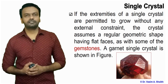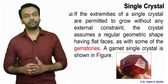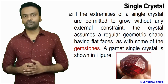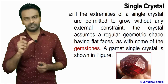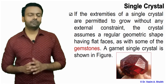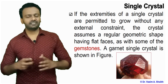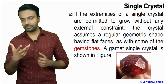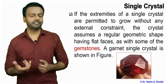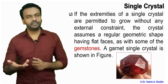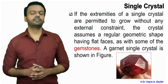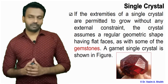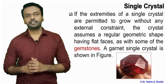To grow a single crystal in nature is very difficult and requires a very controlled environment. If the extremities of the single crystal are permitted to grow without any hindrance or external constraints, the single crystal assumes a geometric shape having flat faces, as with some gemstones. A garnet single crystal is shown in the figure — a gemstone which is very costly. Single crystals occur at very controlled conditions of certain pressure and temperature, found deep under the earth. But you can grow these single crystals in the lab, and there are many applications of single crystalline material.